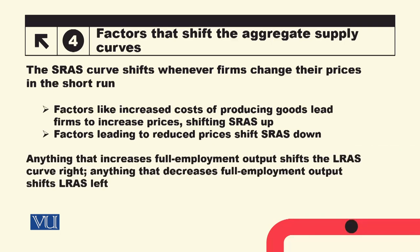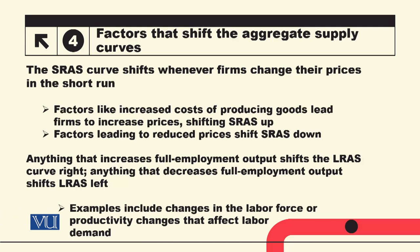Anything that increases full employment output will shift the long-run aggregate supply curve rightward۔ اگر full employment output decrease ہو تو leftward shift ہو جائے گا۔ Full employment level کیوں بدلتا ہے؟ اگر labor force میں اضافہ ہو تو labor supply curve shift ہوتی ہے، employment level بڑھتا ہے اور output بڑھ جاتی ہے۔ Productivity میں change آنے سے marginal product of labor بڑھتا ہے، labor demand curve shift ہوتی ہے، employment اور full employment level بڑھ جاتی ہے، اور long-run aggregate supply curve rightward shift ہو جاتی ہے۔